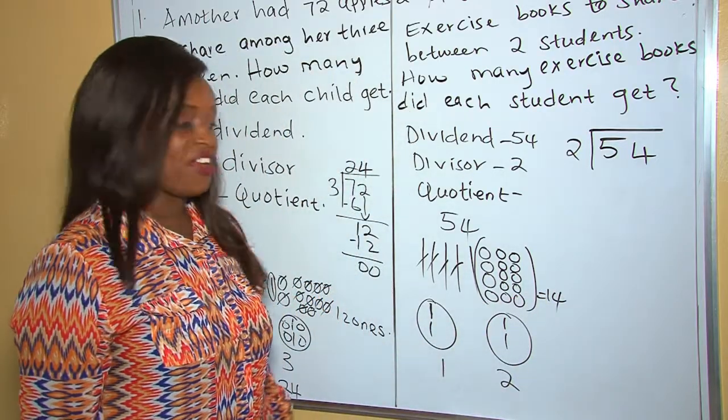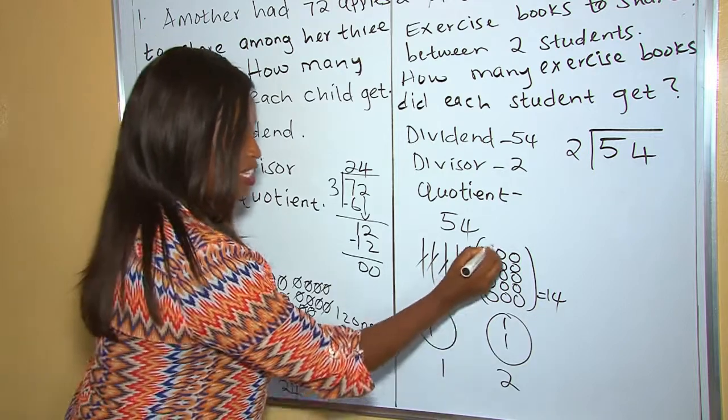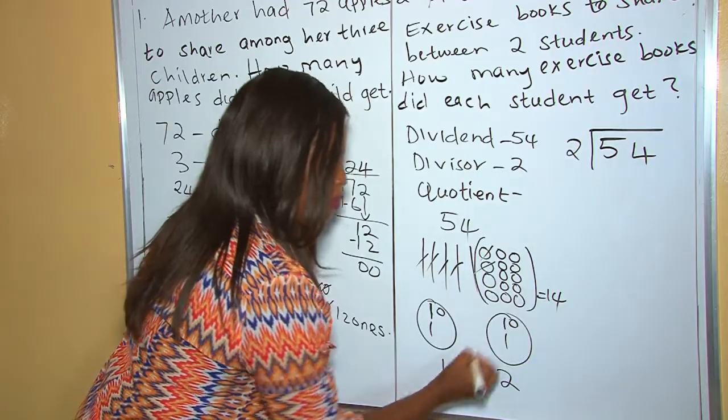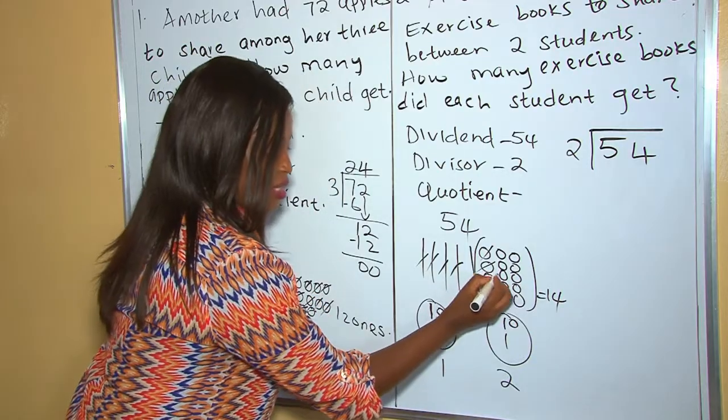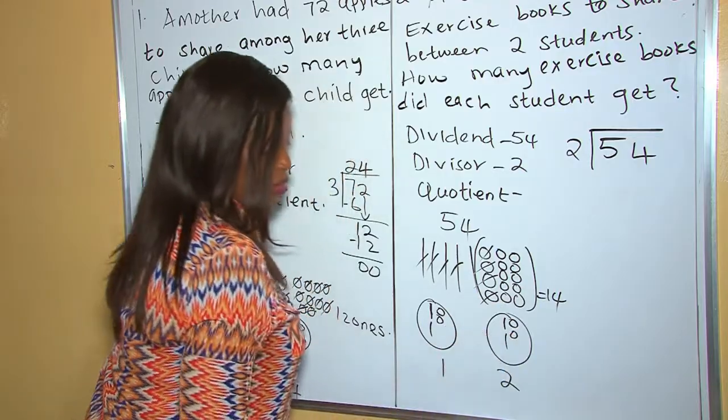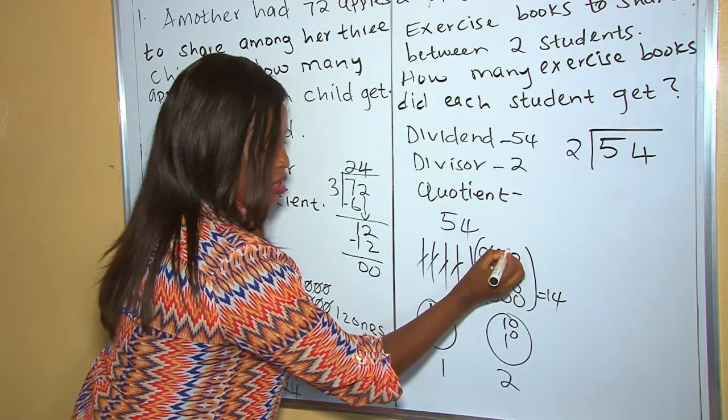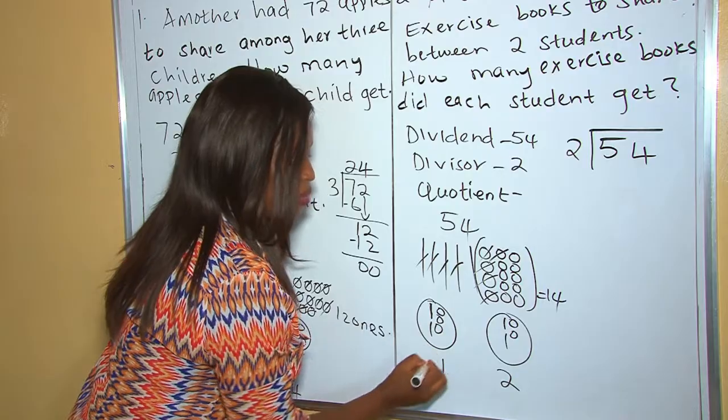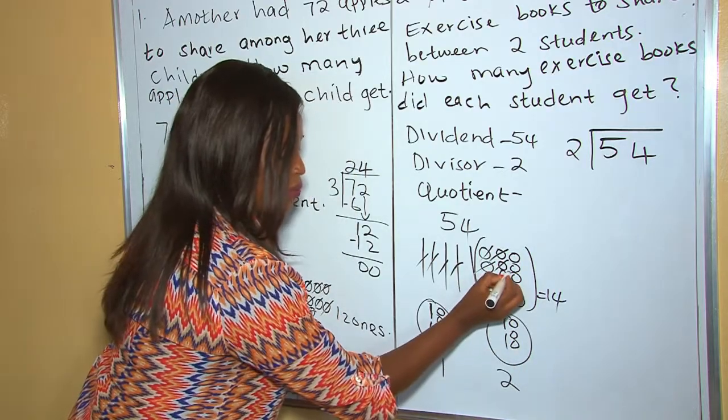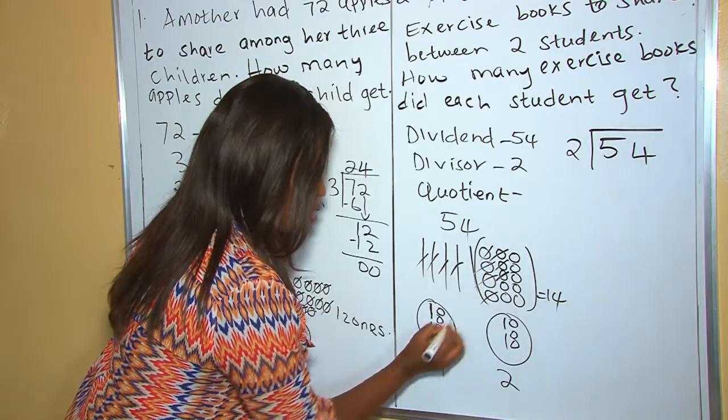Now let's start sharing the ones. The first one goes to the first student. The second one to the second student. The third one to the first student. The fourth one to the second student. The fifth one goes to the first student. The sixth one goes to the second student. Seventh, now like that.